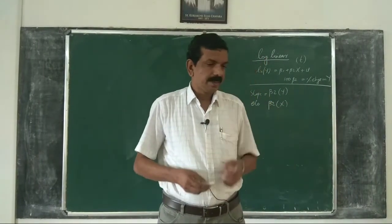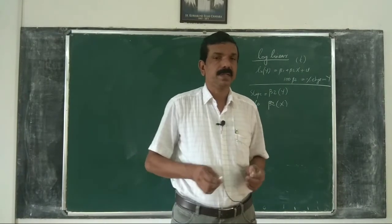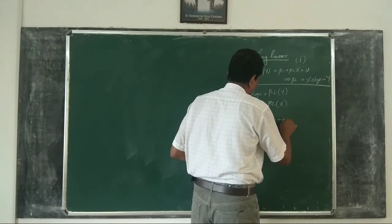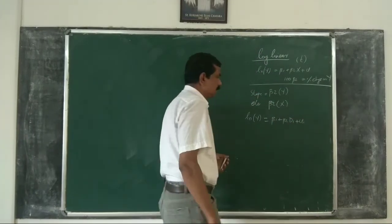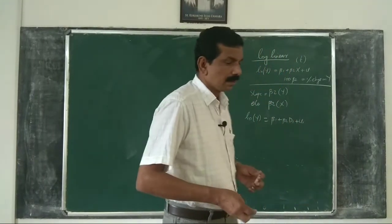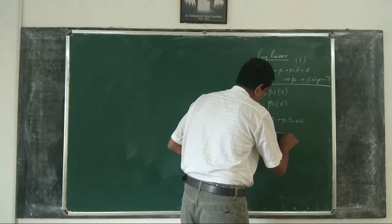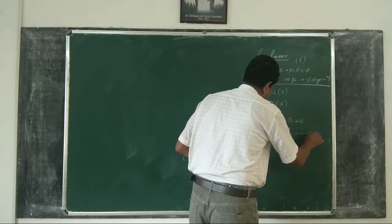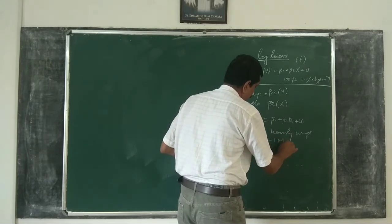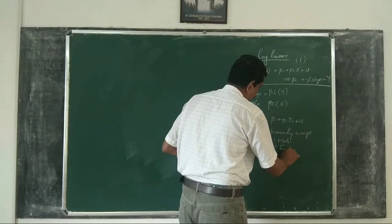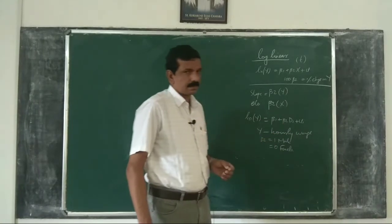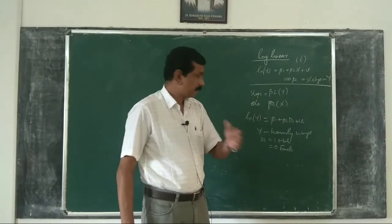Now, what will be the interpretation if x is a dummy variable? Suppose ln(y) = β1 + β2·di + ui, where the dependent variable is ln(y) and the independent variable is a dummy. For example, y is hourly wage in log form, with di = 1 if male and di = 0 if female, and we are testing for the possibility of wage discrimination.